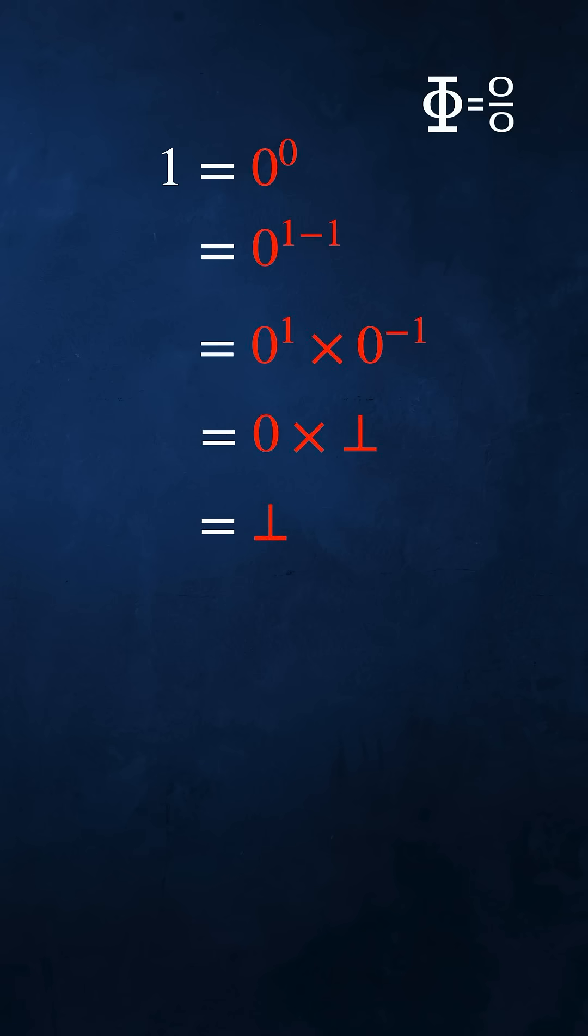But look at the right hand side. We've correctly calculated 0 to the power 0 equals bottom. You're free to do that if you want an arithmetic that can result in errors.